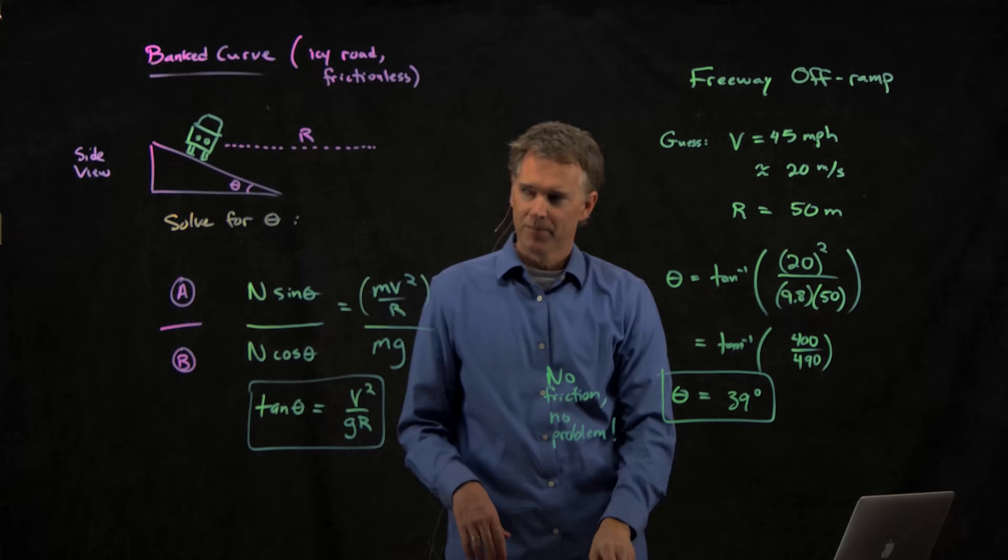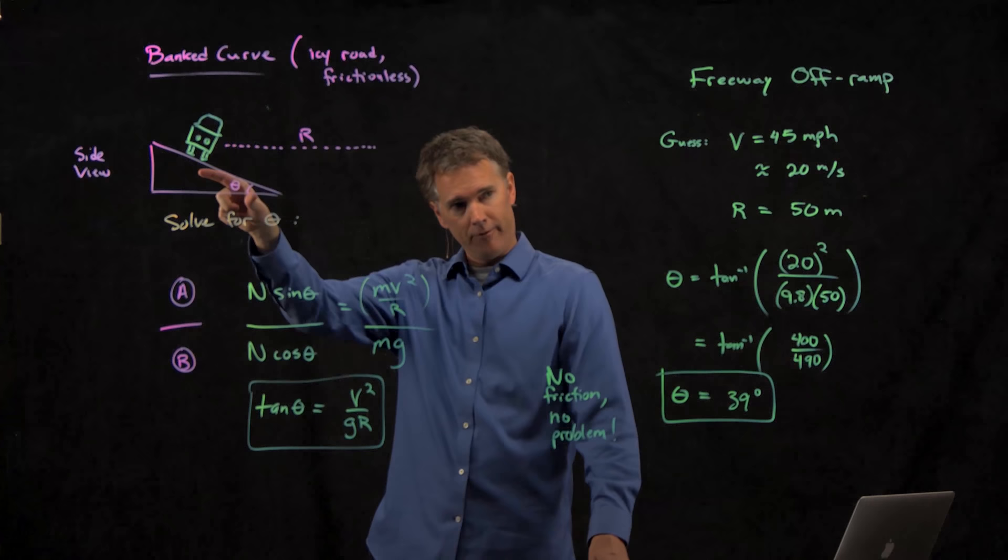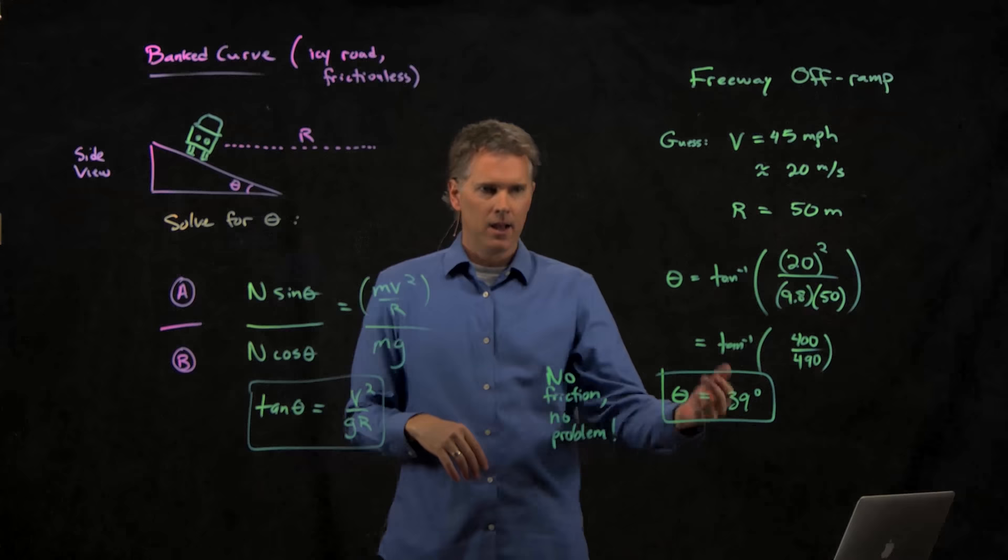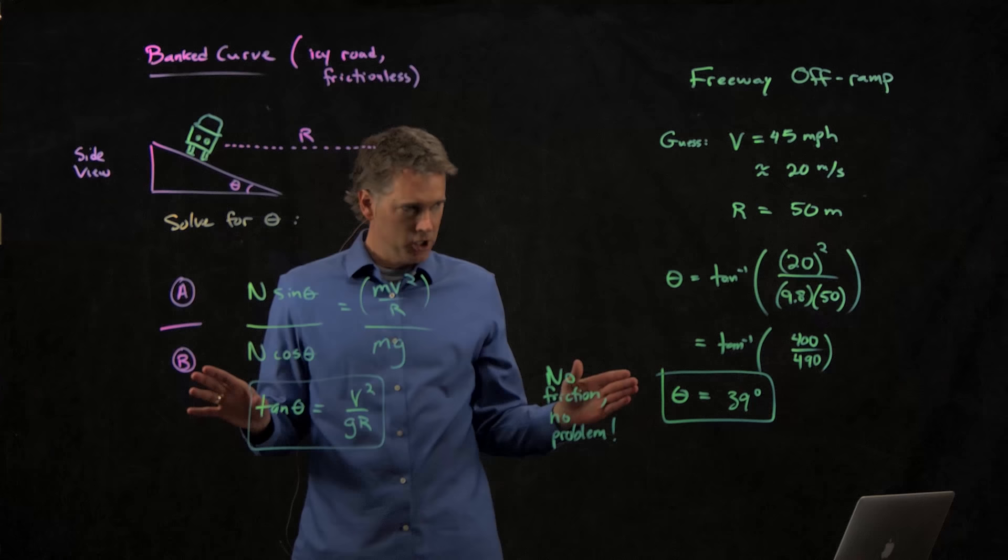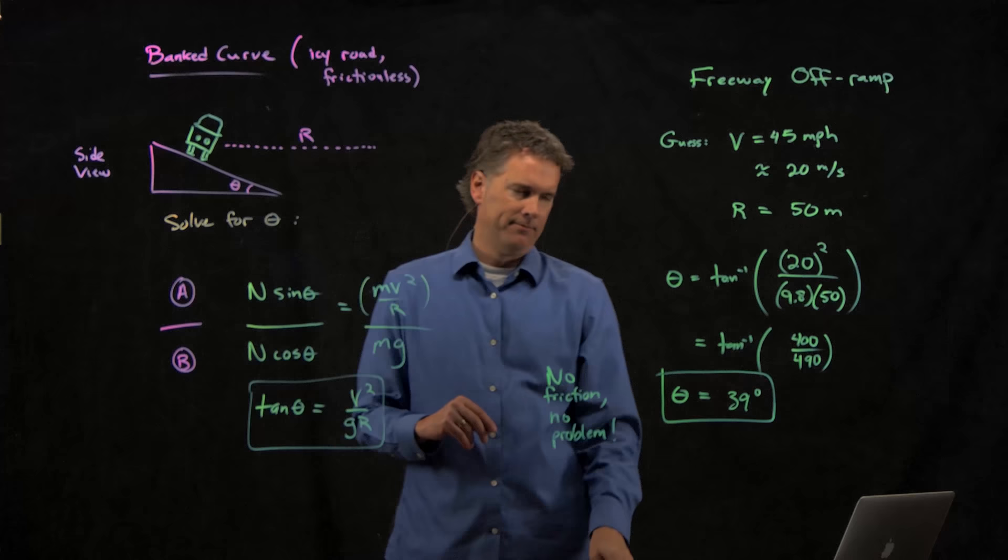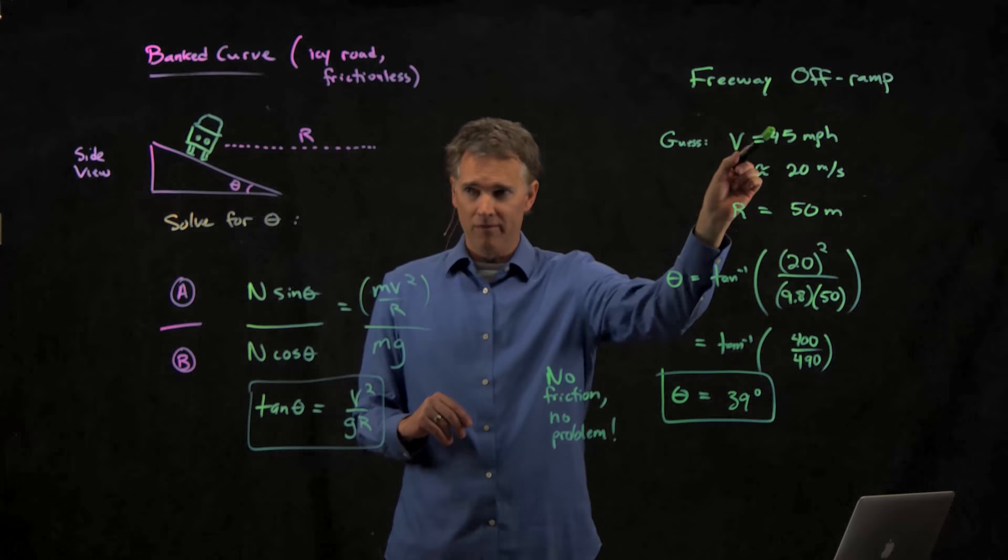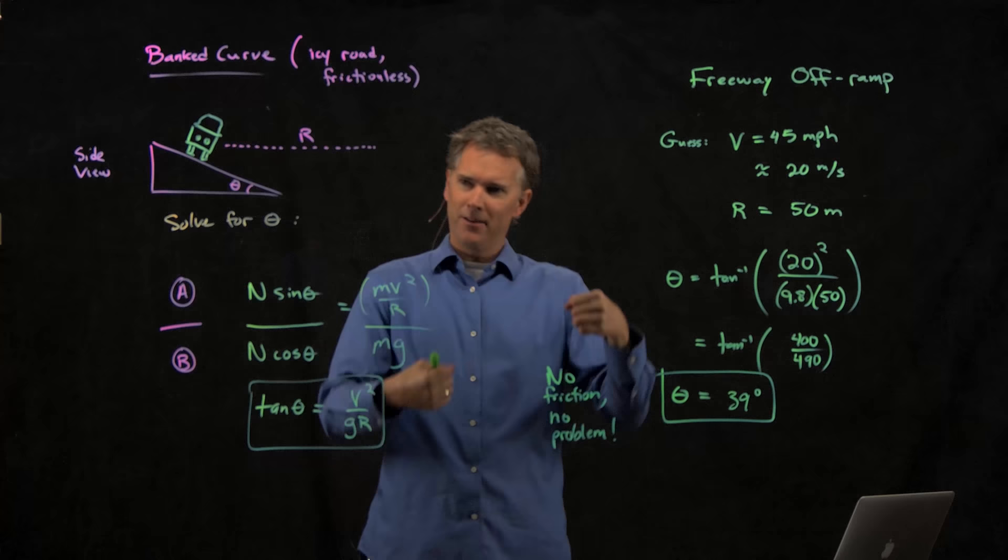So the idea for you engineers is if you're going to build that freeway off-ramp, and you want to know how steep to make it, go through this calculation knowing that it has to be the right angle such that if there's no friction at all, somebody could still make the turn. Now, nobody ever does this. Nobody ever actually takes the exit at 45 miles per hour. You guys are heading down the freeway at 80, and you're going on the off-ramp. Try it sometime.